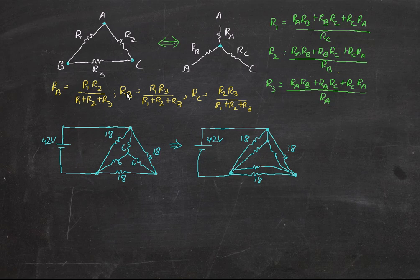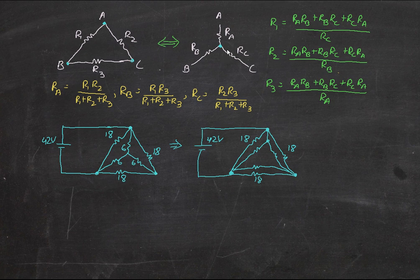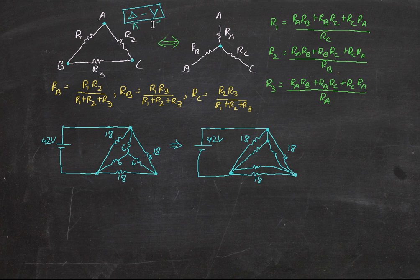Welcome back to the channel. Today we're going to be doing the Delta-Y and Y-Delta conversion, which is another form of simplifying a circuit. The Delta-Y and Y-Delta conversion, or the Pi-T and T-Pi conversion, are similar. You just have to visualize the Pi circuit as the Delta circuit and the T circuit as the Y circuit. Pi is actually this circuit and T is actually this circuit.